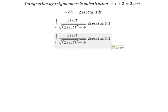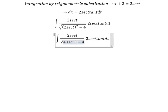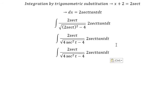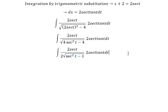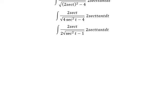Now we get four sec squared t. The square root of number four we put outside, that is number two. Next we have...